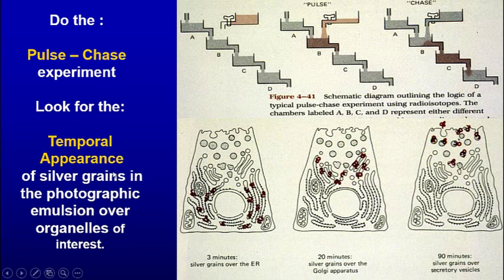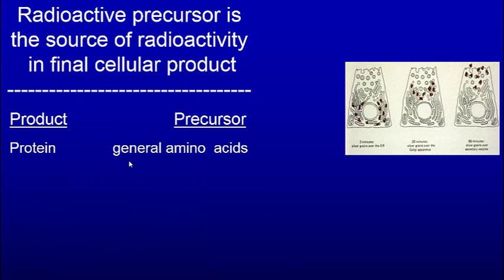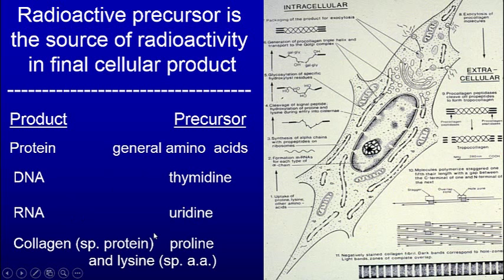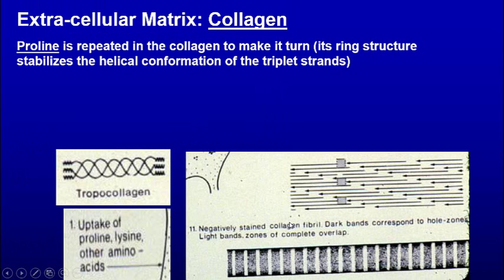Remember the pulse chase experiment and the temporal appearance of things? A similar type of thing applies here. If you're going to look at a pancreatic cell, you might use radioactive general amino acids. If you're going to do DNA, use thymidine; RNA, use uridine. But if you're going to look at collagen production, you'll use proline and lysine, which are the amino acids that are incorporated in collagen.